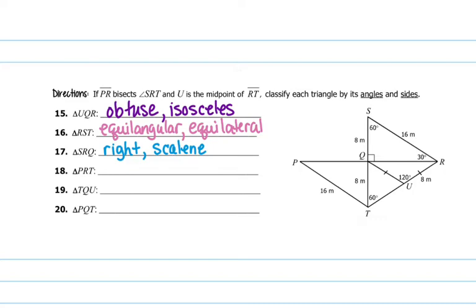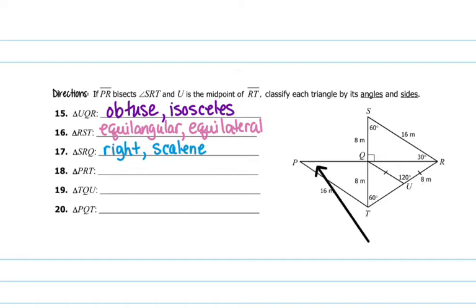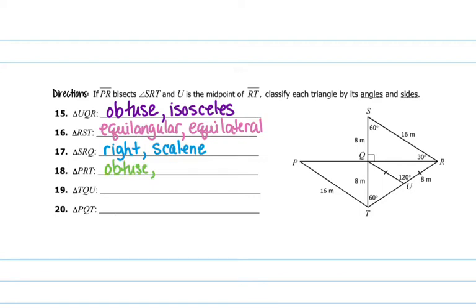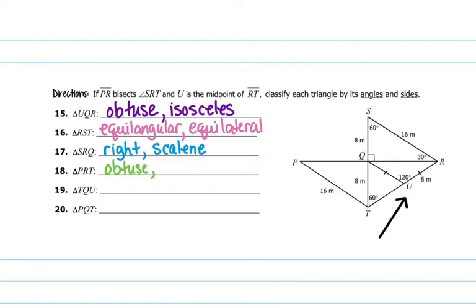And then PRT, which is here to here down — this upside-down triangle — is obtuse because this angle measure is greater than 90 degrees. You have 16 over here and 16 over here, but this one is not 16, so it has to be isosceles.